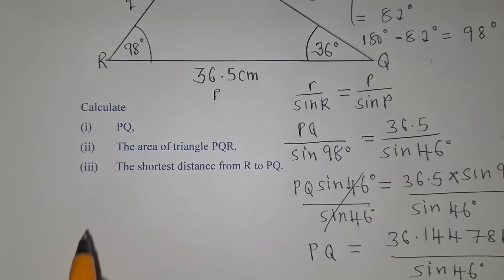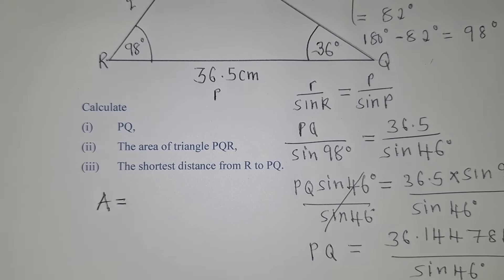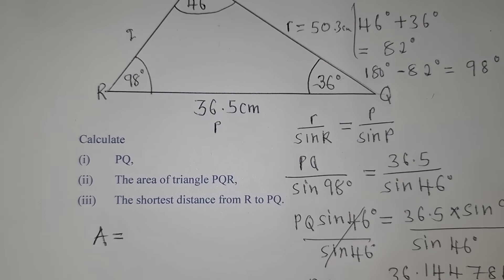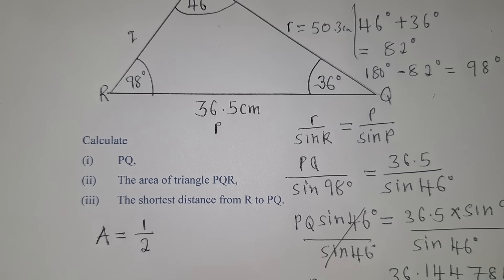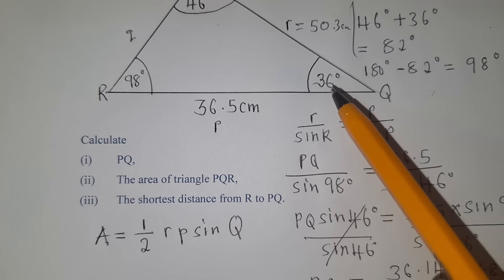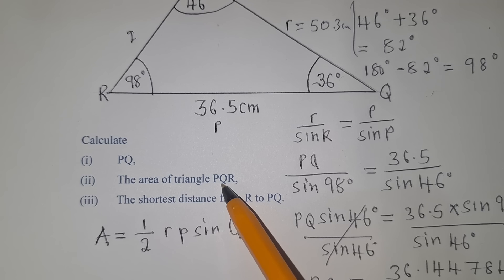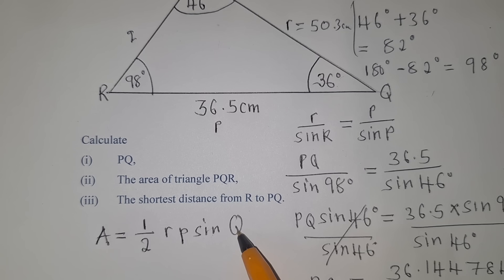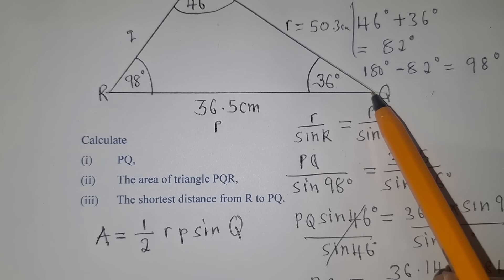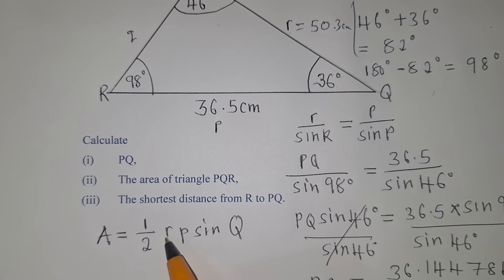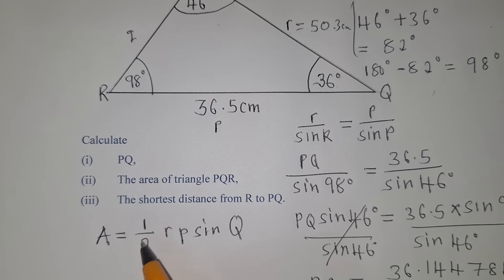Next, find the area of triangle PQR. The formula is Area = ½ × r × p × sin Q. Choose angle Q, which is 36°, and use the two sides adjacent to it. The two sides are small letter r (= 50.3) and small letter p (= 36.5), and the included angle is Q = 36°.